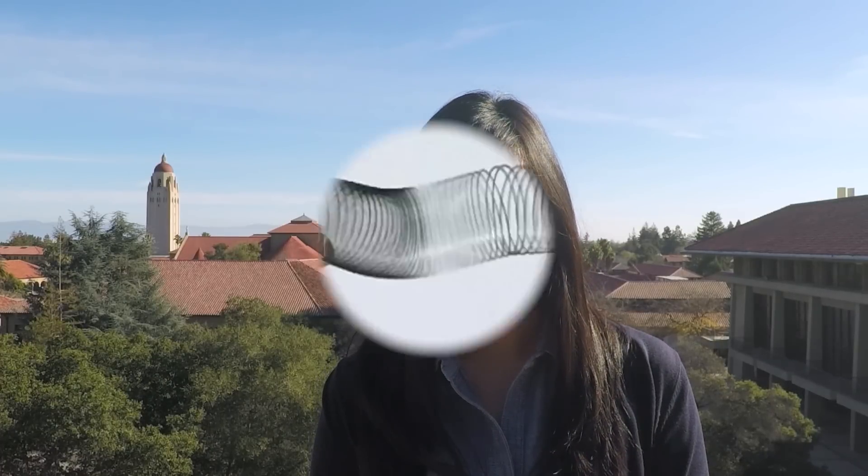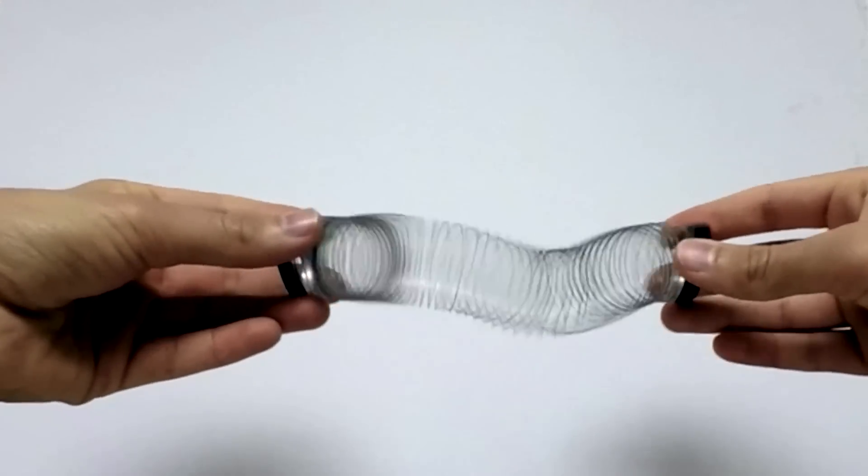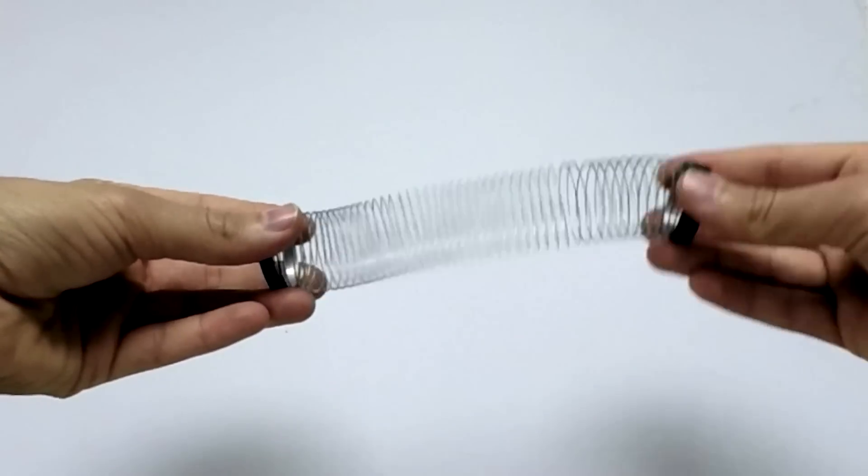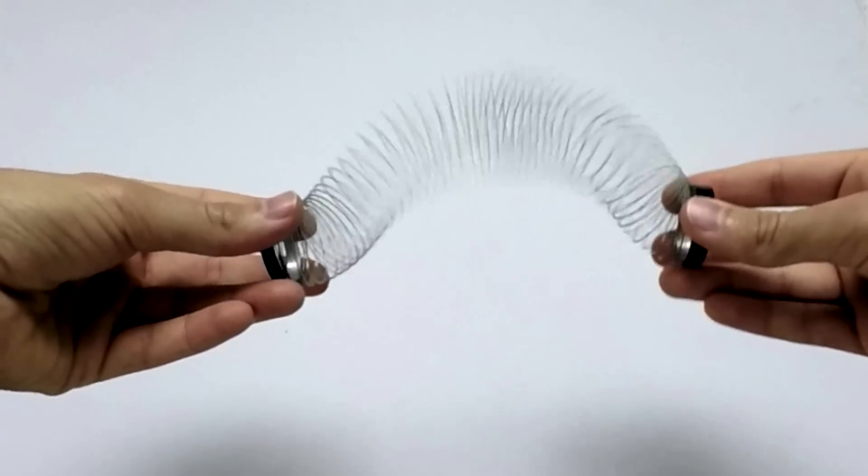Plasmons are collective oscillations of free charges in a material. Imagine shaking a slinky. Most of the time it just flops around, but if you shake it at a particular speed, a standing wave emerges. A resonance.